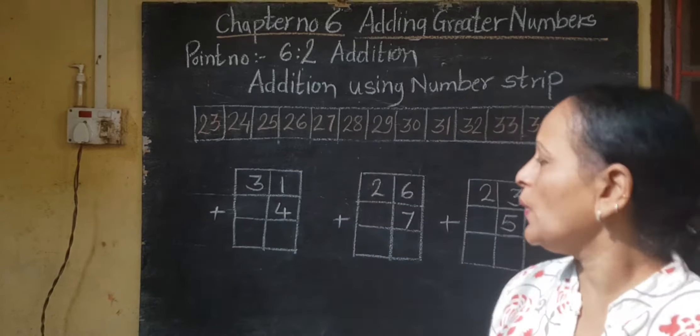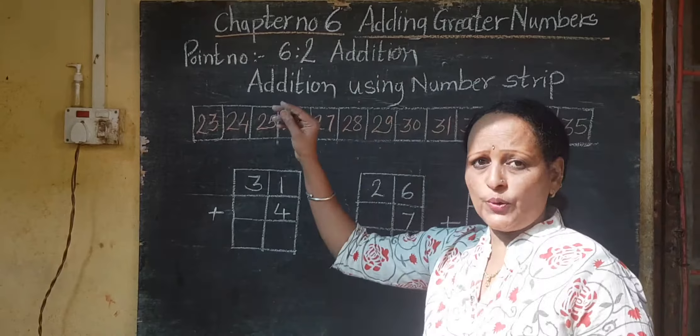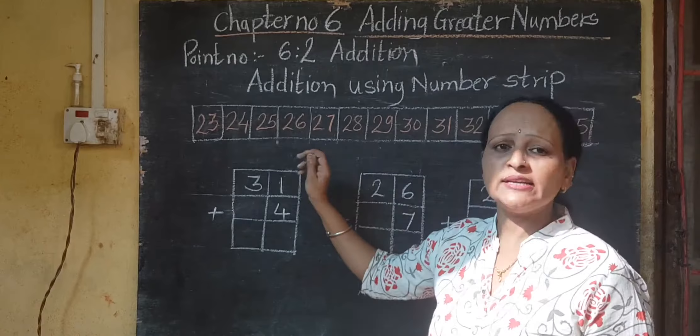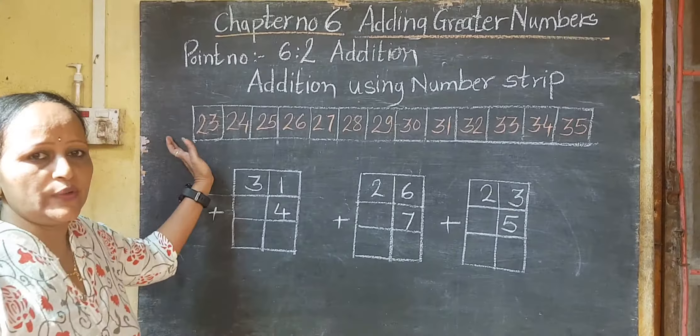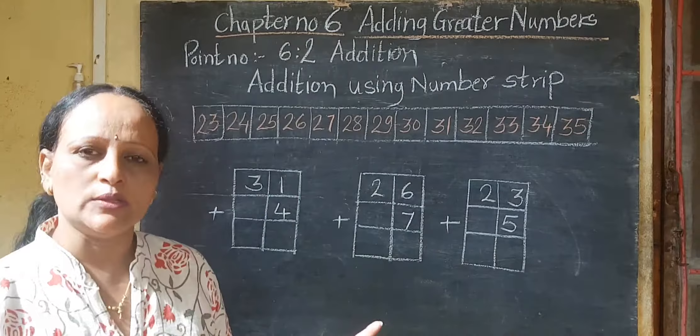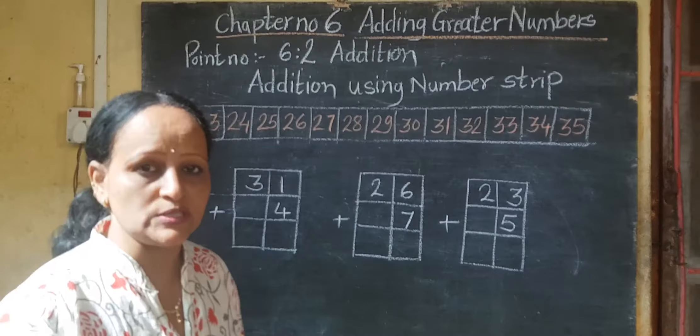Good morning, students. Today we are going to study from 6.2: Addition using number strips. You have to do addition by using the number strips. I have drawn a number strip here from 23 to 35, and using this number strip you have to do the addition.